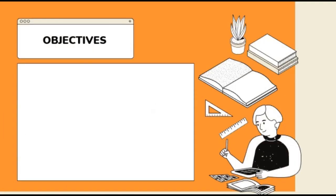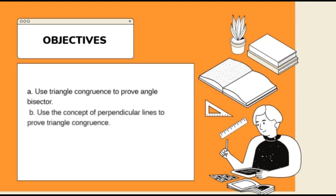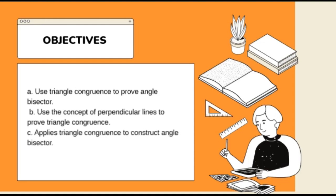And for our objectives: use triangle congruence to prove angle bisectors, use the concept of perpendicular lines to prove triangle congruence, and apply triangle congruence to construct angle bisectors.